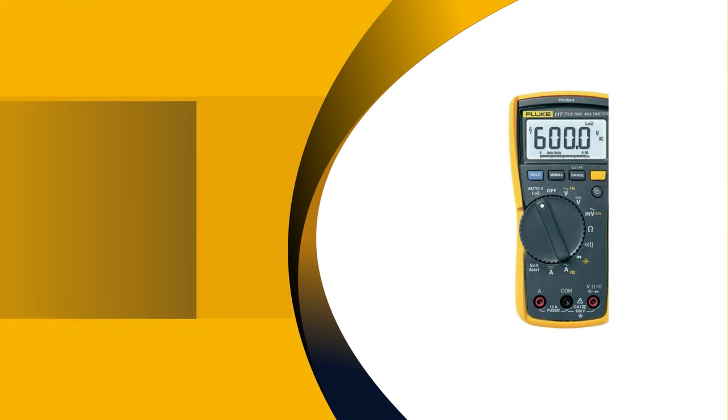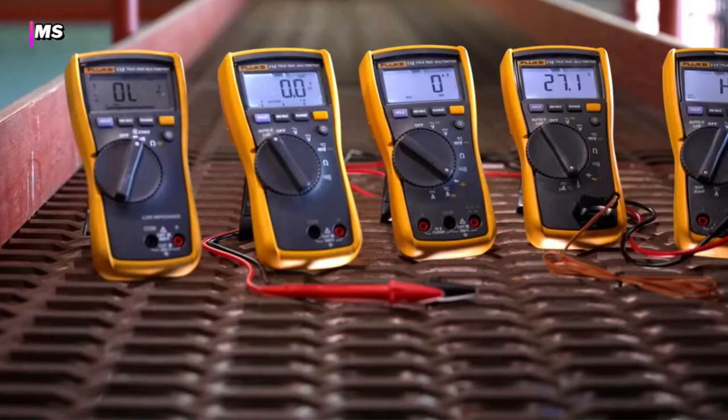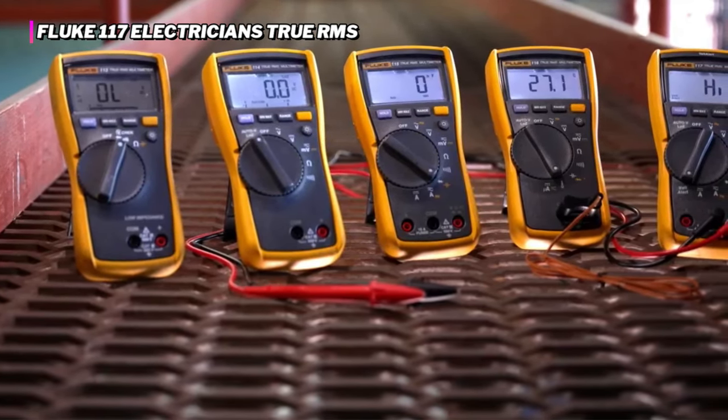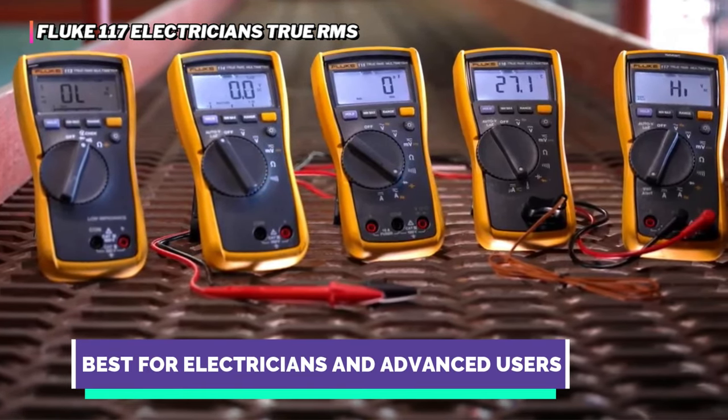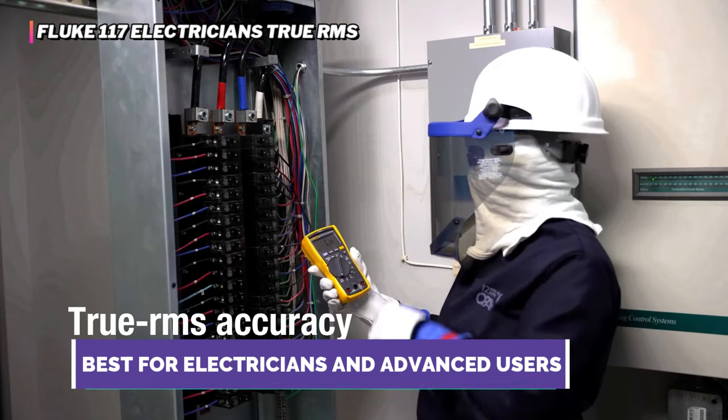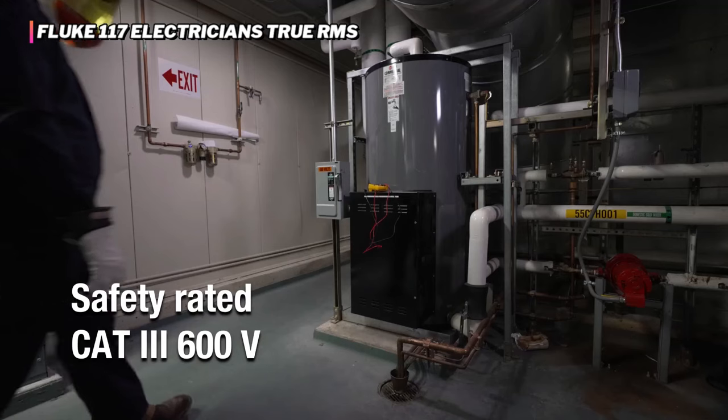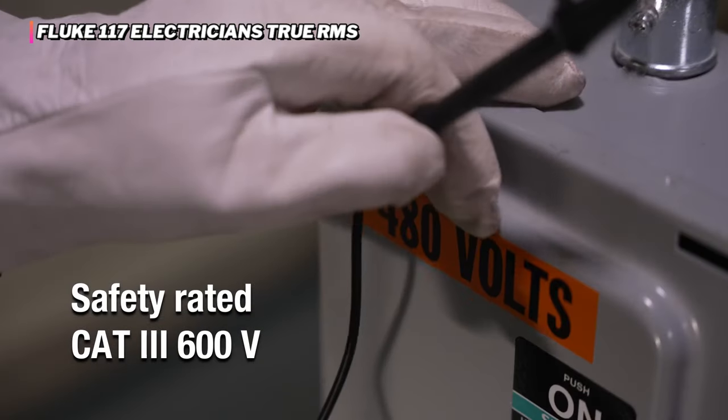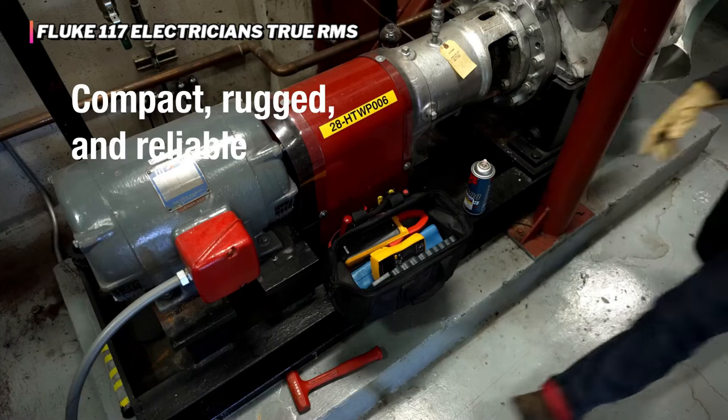Up next in fourth place is the Fluke 117 Electrician's True RMS. The Fluke 117 is a highly technical meter for highly technical work. Offering plenty of advanced features and functions, this DMM is designed with electricians in mind, especially when it comes to taking AC measurements. We love that it features an integrated non-contact AC probe and comes with a clear and intuitive interface.